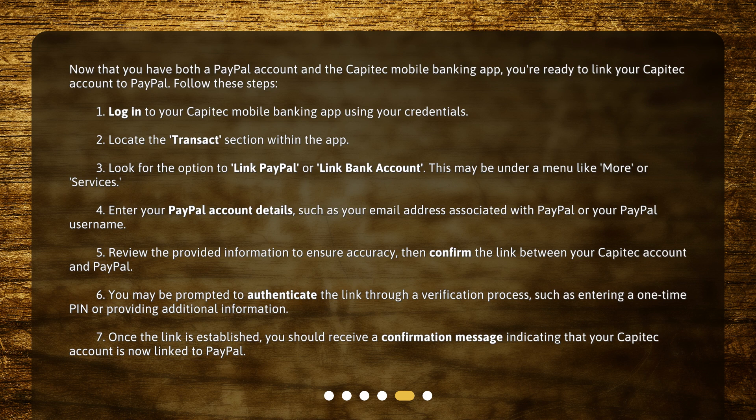This may be under a menu like More or Services. 4. Enter your PayPal account details, such as your email address associated with PayPal or your PayPal username. 5. Review the provided information to ensure accuracy, then confirm the link between your Capitech account and PayPal.